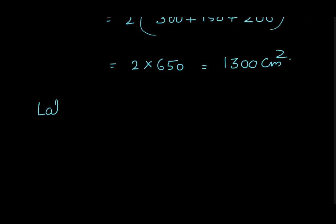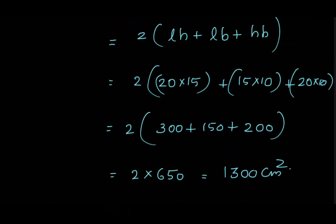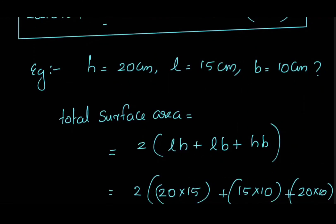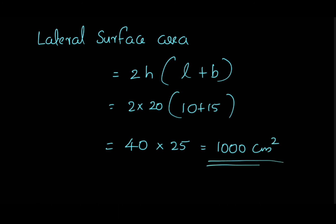For the lateral surface area, using the formula 2H(L + B): H is equal to 20 cm, and length plus breadth is 15 plus 10 equals 25. So lateral surface area equals 2 into 20 into 25 = 1000 cm². We applied both the lateral surface area and total surface area equations directly to calculate. Let's see in our next video.